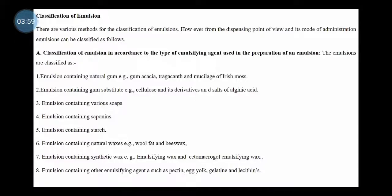Also cetomacrogol emulsifying wax. The last class is emulsions containing other emulsifying agents such as pectin, egg yolk, gelatin, and lecithin. These are animal sources of emulsifying agents — egg yolk is obtained from egg, gelatin is obtained from animals. These are the non-vegetable sources of emulsifying agents.